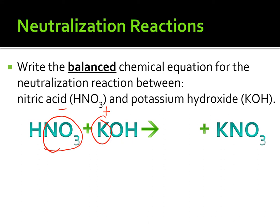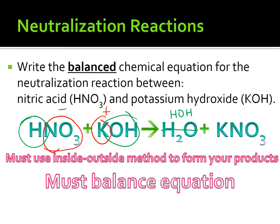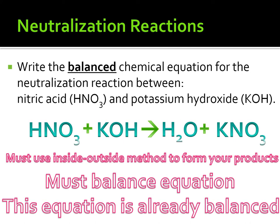Next, the outsides: we have OH and H, so HOH combines to make water. This equation is already balanced. So our full example is: HNO3 + KOH → KNO3 + HOH.